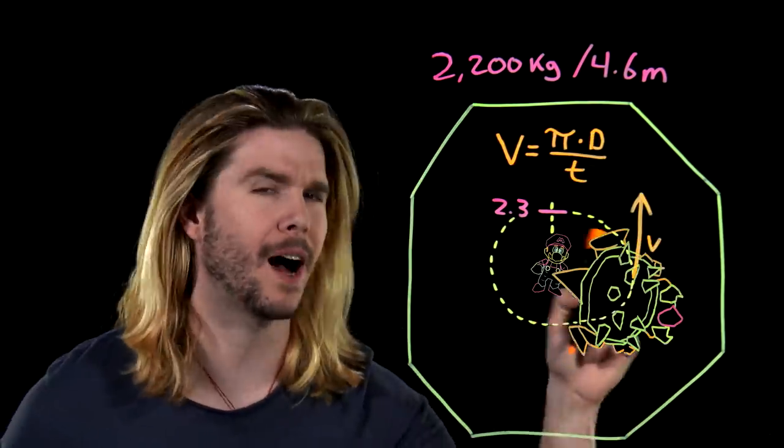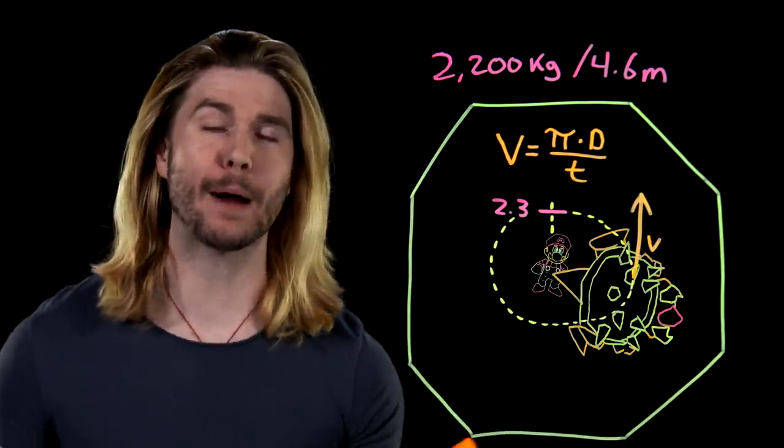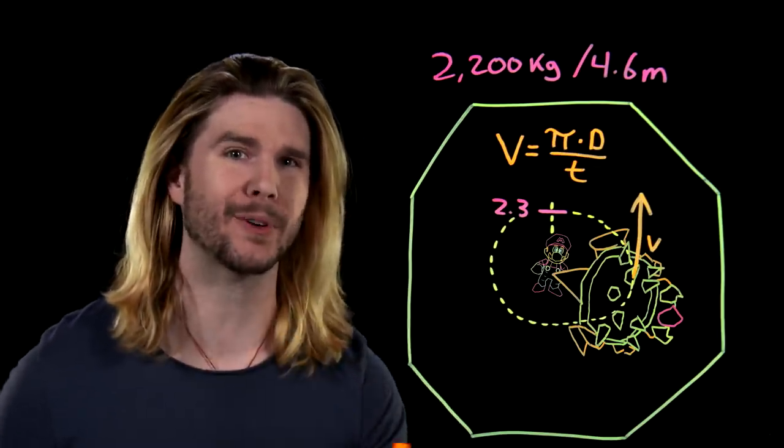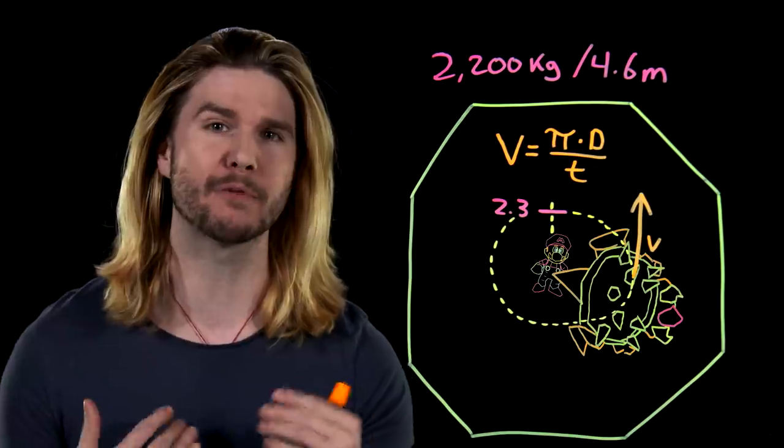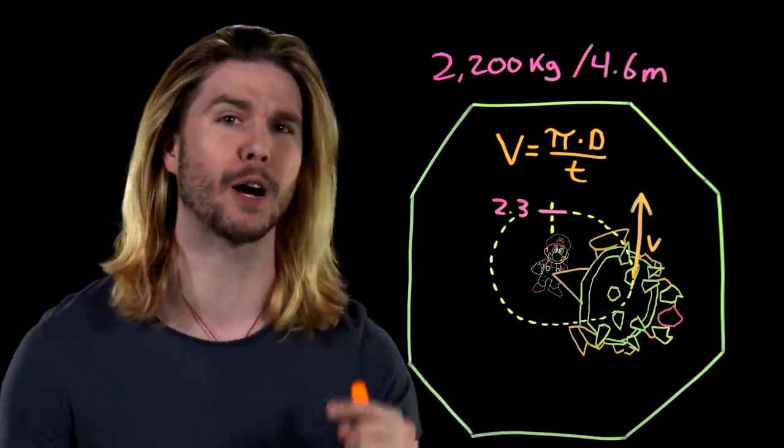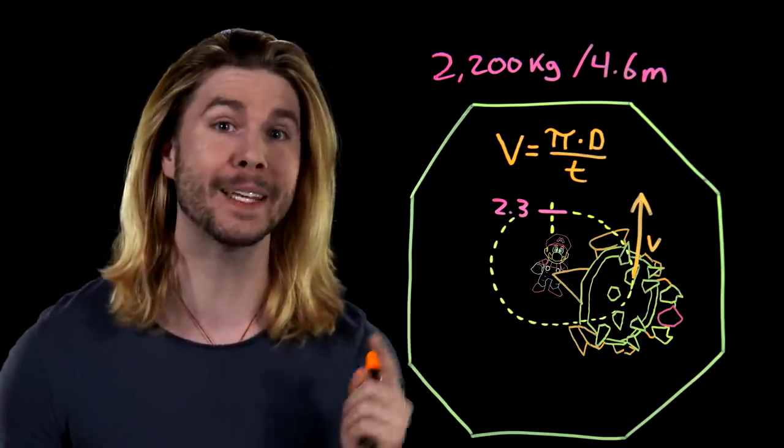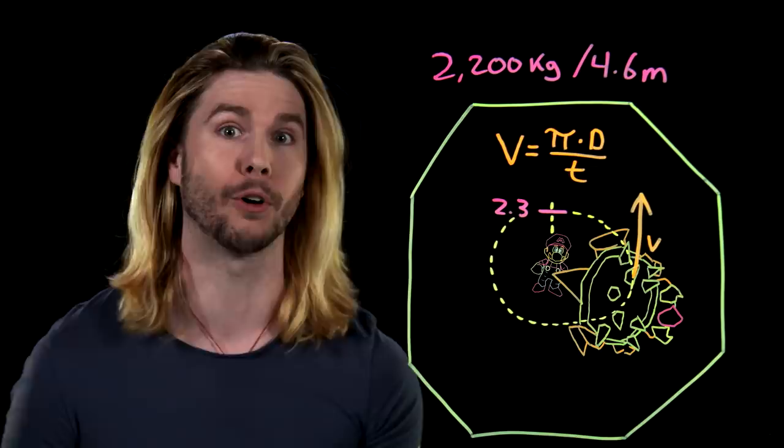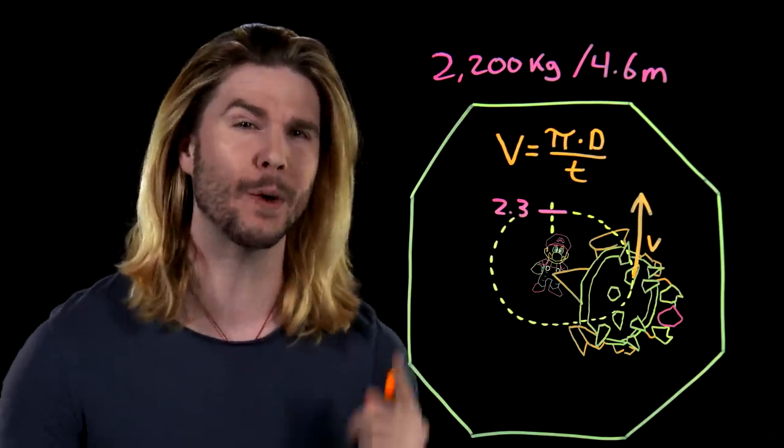At every single point on this circle, the velocity of Bowser during the spin has to equal the amount of distance Bowser is covering per some unit of time. If we choose that distance to be the full circumference of the circle and the time to be the time it takes to complete one full rotation of that circle, the circumference, then we can get the velocity.